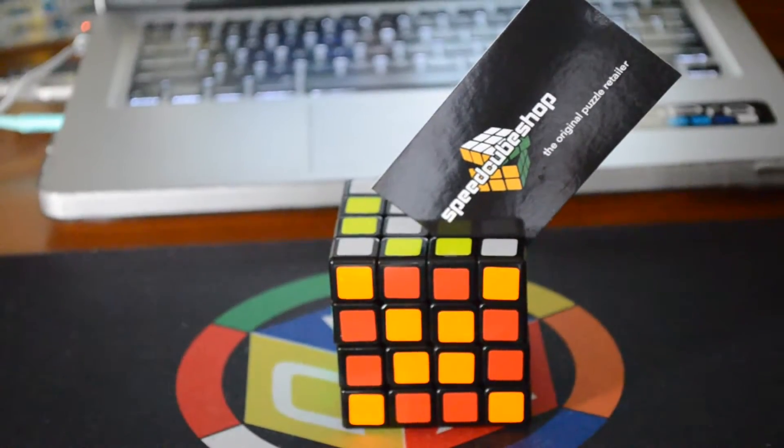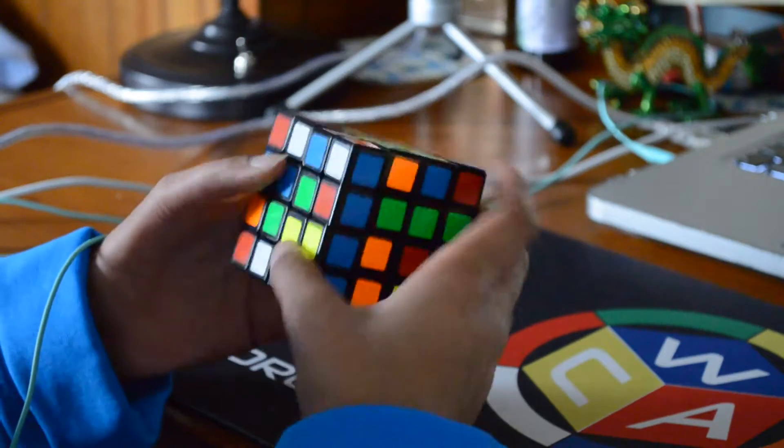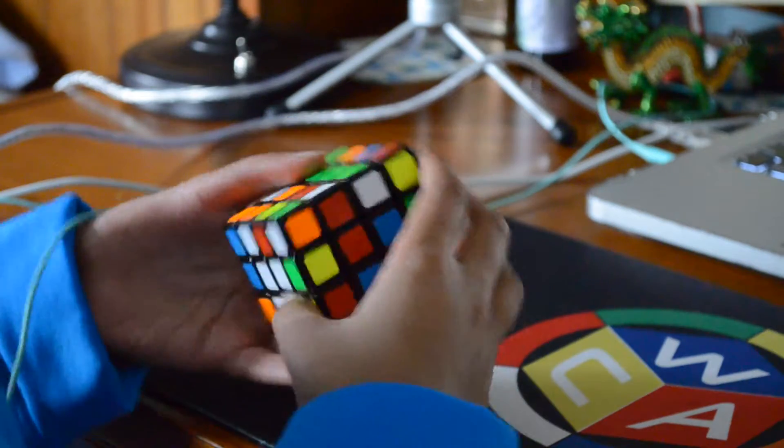After all, 4x4s are known for being expensive, but this cube is a mere $7.95 from speedcubeshop.com, which is almost $20 less than the more prevalent 4x4s on the market, such as the Ausus, both regular and mini.